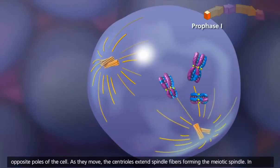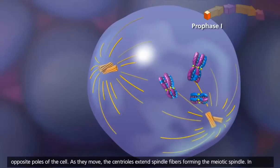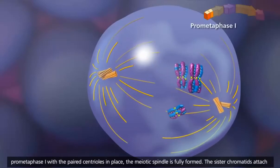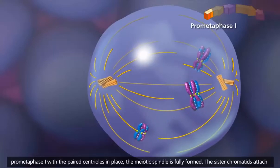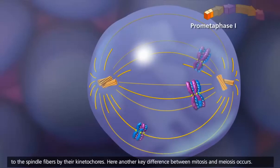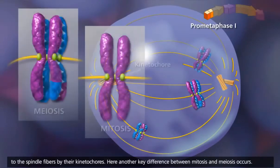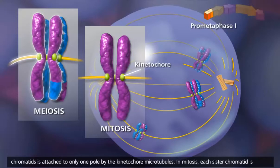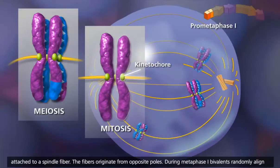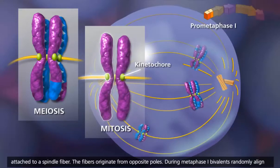As the centrioles move, they extend spindle fibers forming the meiotic spindle. In prometaphase I, with the paired centrioles in place, the meiotic spindle is fully formed. The sister chromatids attach to the spindle fibers by their kinetochores. Here, another key difference between mitosis and meiosis occurs: because of synapsis and crossing over in meiosis, homologous chromosomes remain aligned, so that a pair of sister chromatids is attached to only one pole by the kinetocore microtubules. In mitosis, each sister chromatid is attached to a spindle fiber originating from opposite poles.